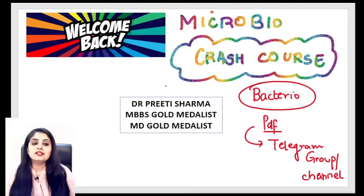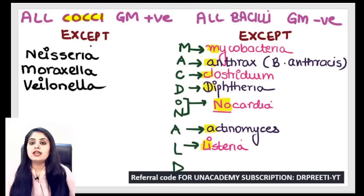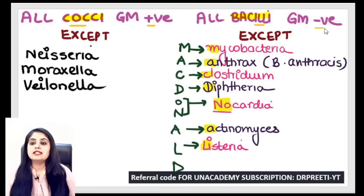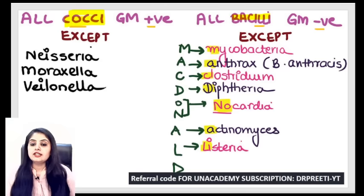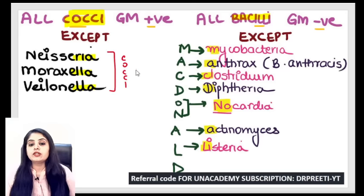Let's begin the session. We're going to talk about cocci and bacilli. The general rule is that all cocci are gram positive, whereas all bacilli tend to be gram negative. However, remember the cocci are gram positive except Neisseria, Moraxella, and Vellonella. These three are the only cocci which are gram negative; all others are gram positive.